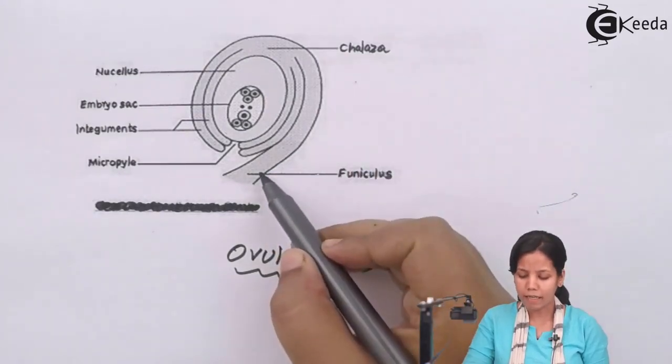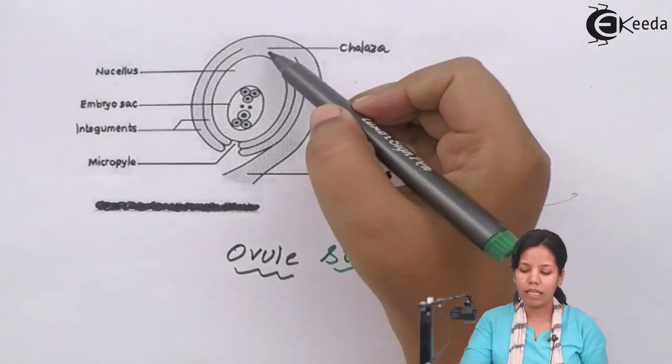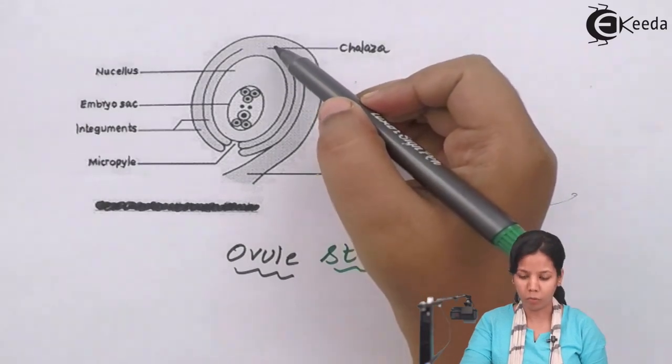Funicles are the parts that connect an ovule to the placenta of an ovary. Chalaza is nothing but upper basal part of an ovule.